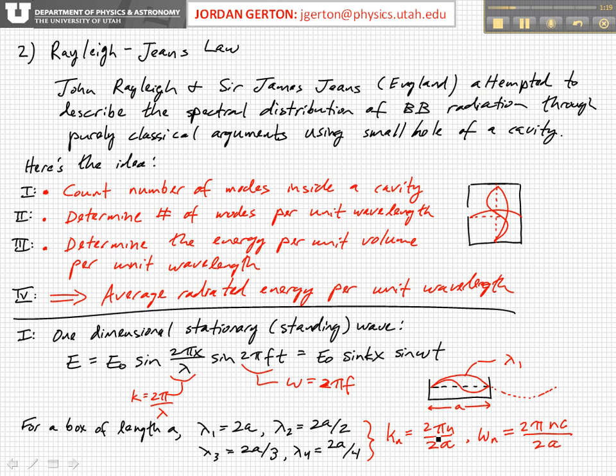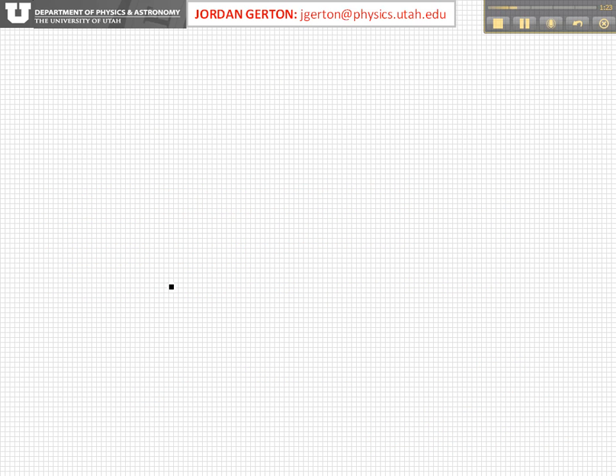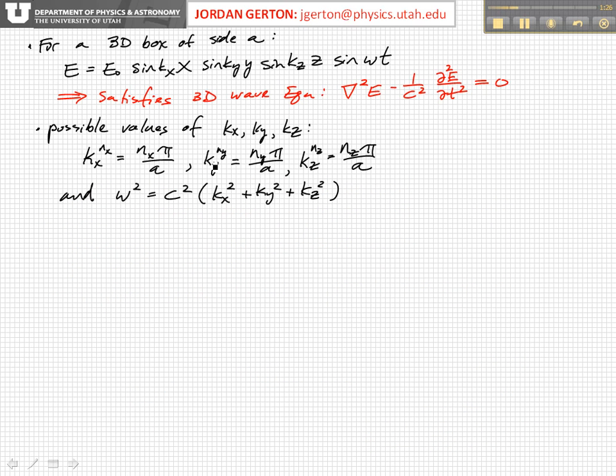k is equal to pi times n over a. And same for ky and kz.